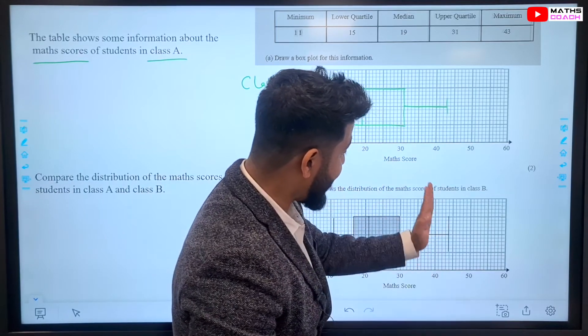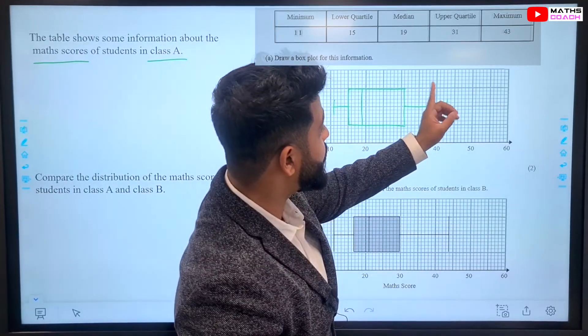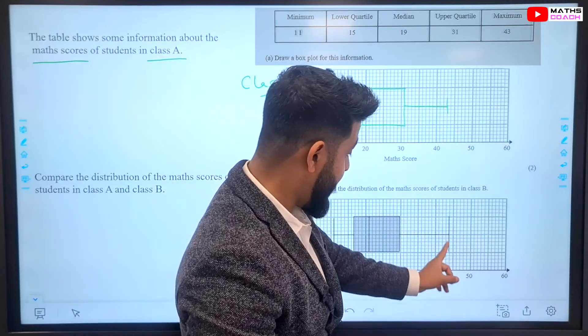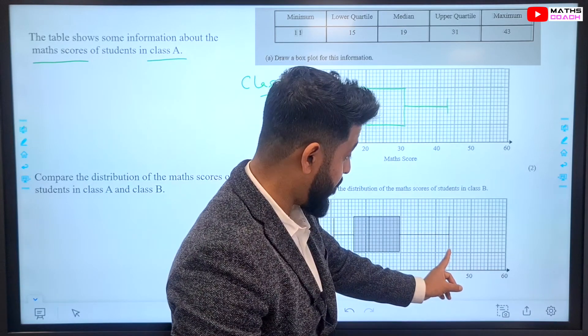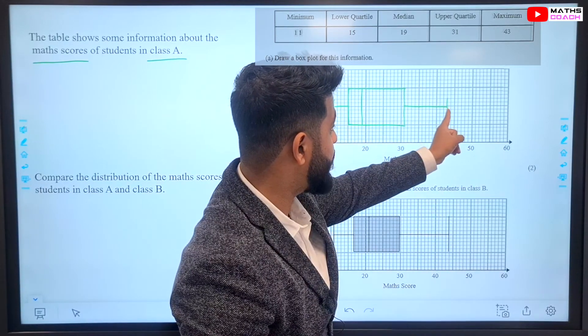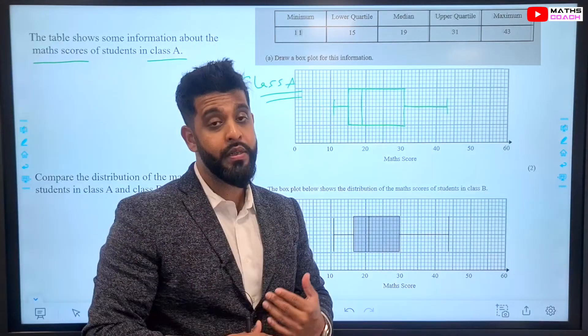the best mark in Class B beat the student who got the best mark in Class A. Class B's best student was 44 marks, and Class A's best student was 43 marks.